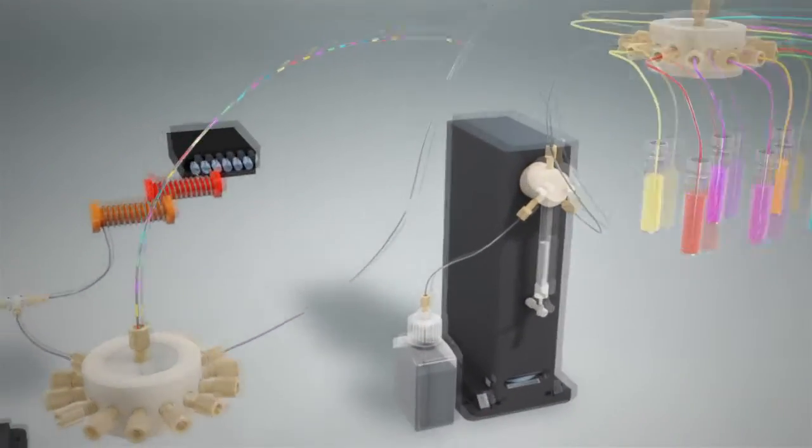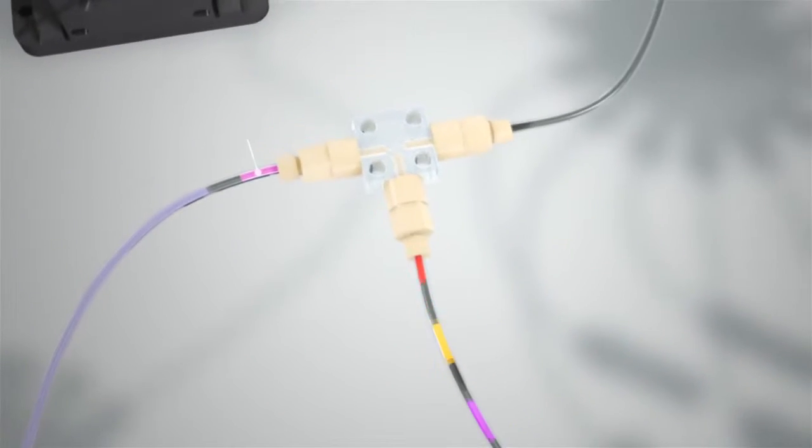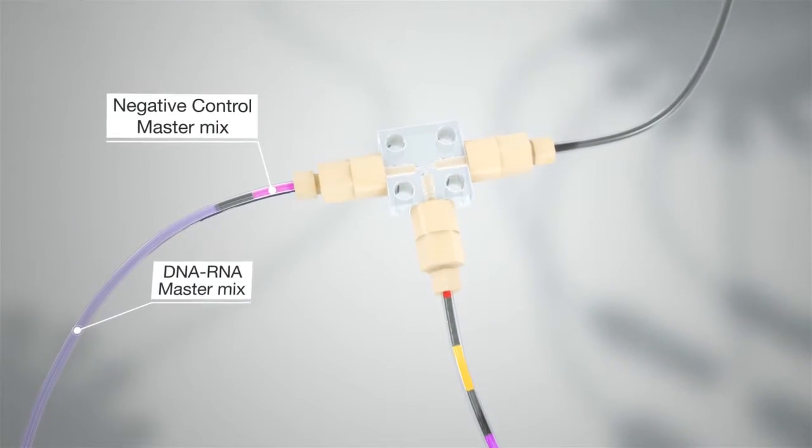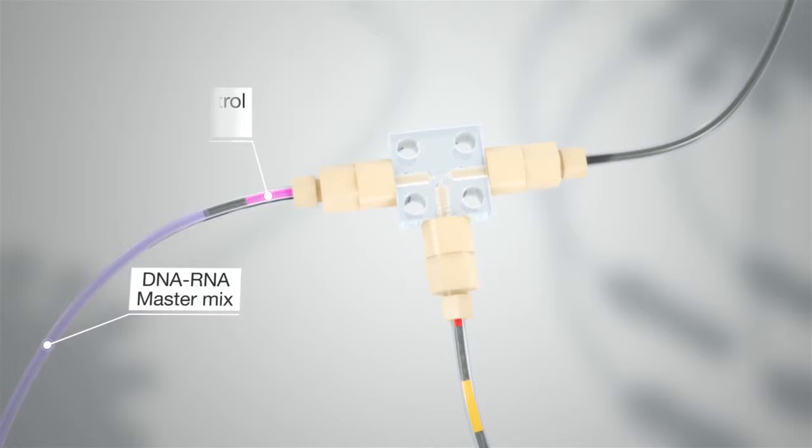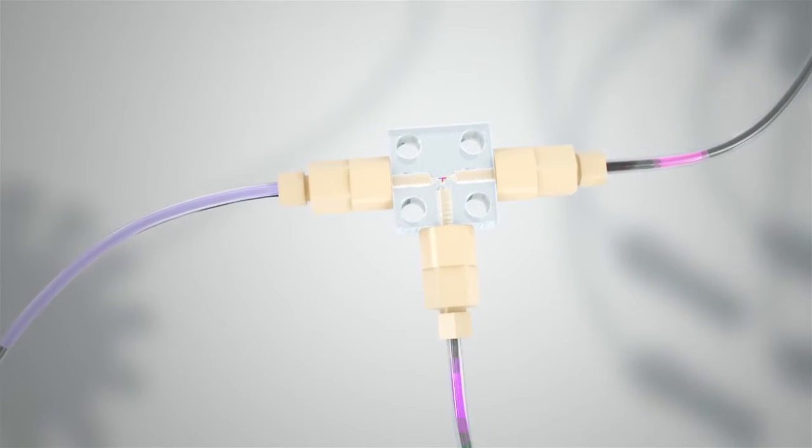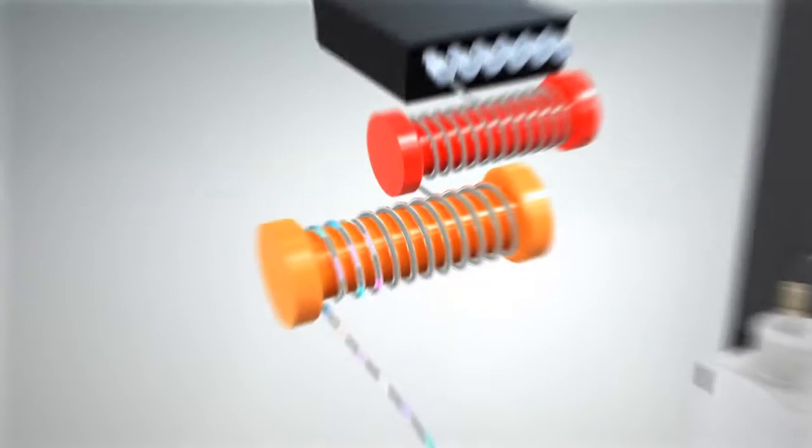The instrument delivers this reagent train to a T-junction where the instrument combines the negative control with the first assay slug and the DNA and RNA containing MasterMix with the remaining 11 assay slugs.